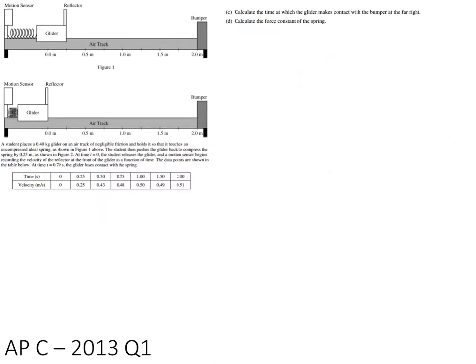Alright, for part C it's saying it wants us to figure out the time it takes for the glider to make contact with the bumper to the far right. There's a few ways to go about doing this - you could actually do that whole area under the curve of the velocity graph. It's important to realize that there's two motions: there's the accelerating when it's connected to the spring, and then there's the constant speed. We actually know exactly when it stops accelerating - it stops accelerating after t equals 0.79 seconds.